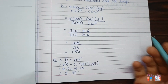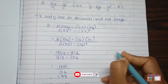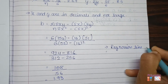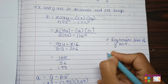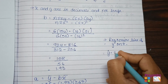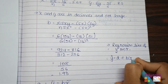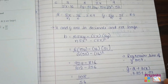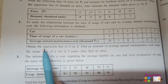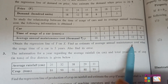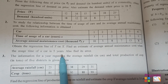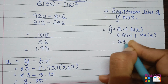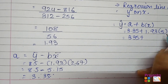Now we put the values of b and a into the regression line of y on x: ŷ = a + bx = 3.35 + 1.93x. The question asks to find the estimated average annual maintenance cost when the usage time is 5 years, so we substitute x = 5: ŷ = 3.35 + 1.93×5 = 3.35 + 9.65 = 13.